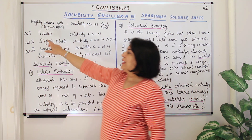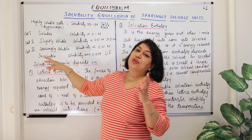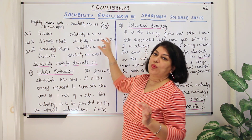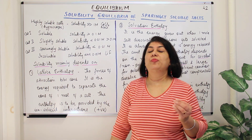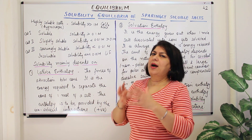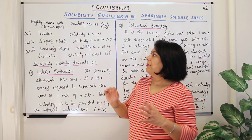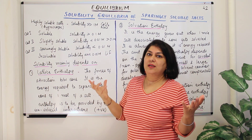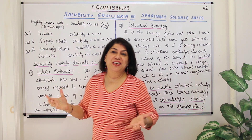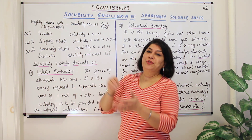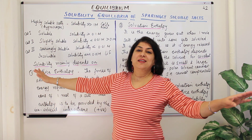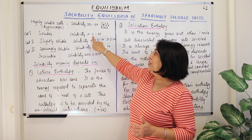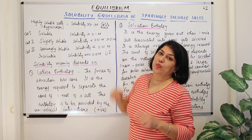Category one is that of soluble salts. Soluble salts have a solubility greater than 0.1 moles per liter. They are pretty soluble but not hygroscopic — they are not going to absorb moisture. But if you put them in water they would get ionized and dissolve very easily with a concentration of more than 0.1 molar.